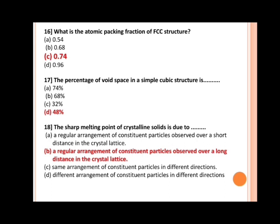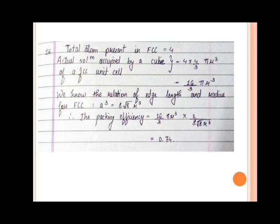Next, what is the atomic packing fraction of FCC structure? Options are: a) 0.54, b) 0.68, c) 0.74, d) 0.98. By solving it, I will show you. Total atoms present in FCC is 4. The actual volume occupied by a cube of an FCC unit cell is 4 × (4/3)πr³. By solving it, we get the answer 16/3 πr³. We know the relation of edge length and radius for FCC, that is a³ = a√8 r³. Therefore, the packing efficiency equals 16/3 πr³ × 1/(8√8 r³). By solving it, we get the answer 0.74.